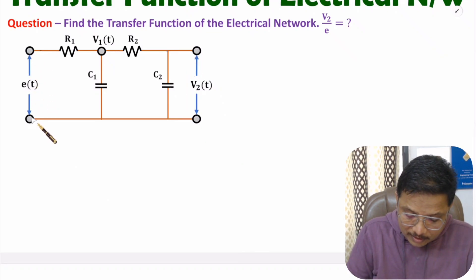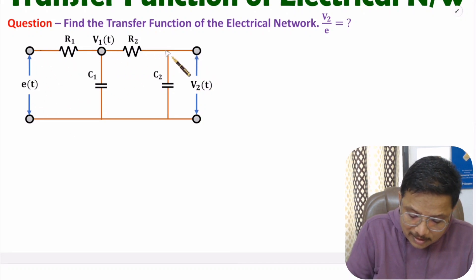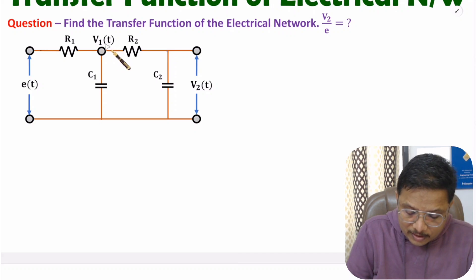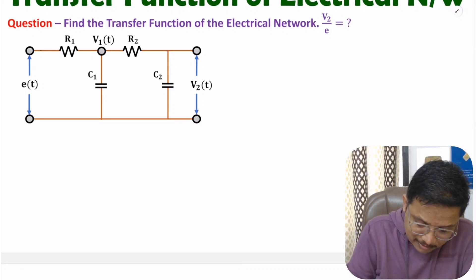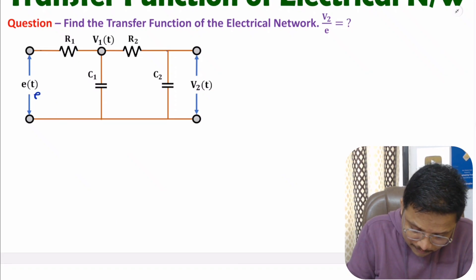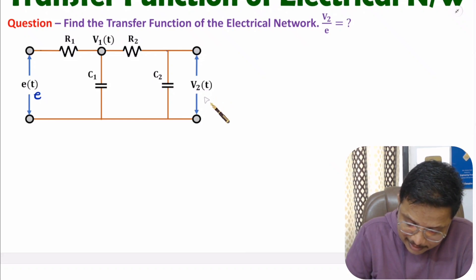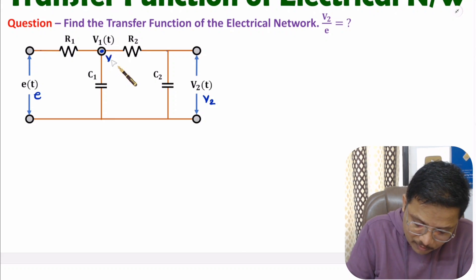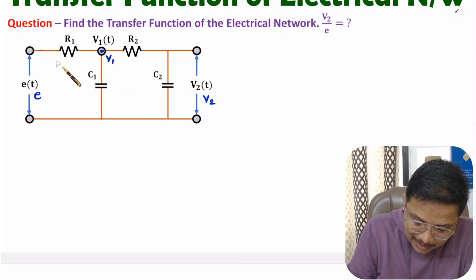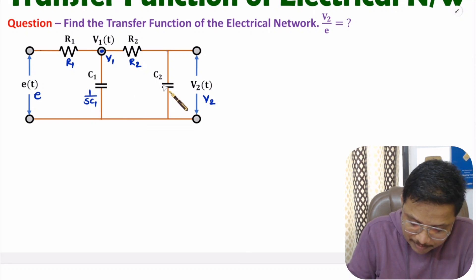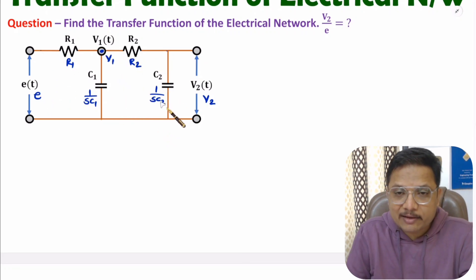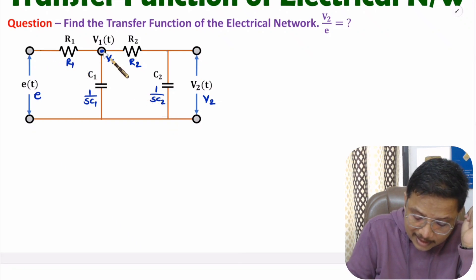If you observe this circuit, we have two nodes. At one node we have V1(t) voltage. To get the transfer function, first we need to convert all the elements into the Laplace domain. So E(t) becomes E, V2(t) becomes V2, V1 is V1. R1 has impedance R1, R2 has impedance R2, capacitance C1 has impedance 1/sC1, and capacitance C2 has impedance 1/sC2.